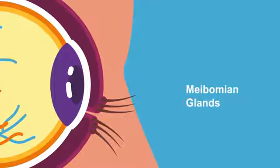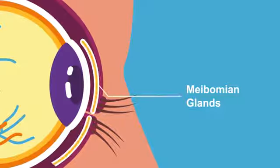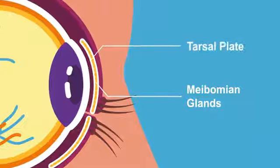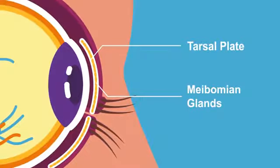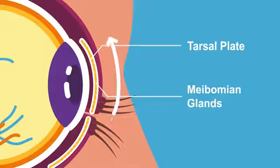Another oil secreting glands called meibomian glands are also present in the dense connective tissue plates, also known as tarsal plates, which also provide skeletal support and are placed posteriorly in the eyelid.